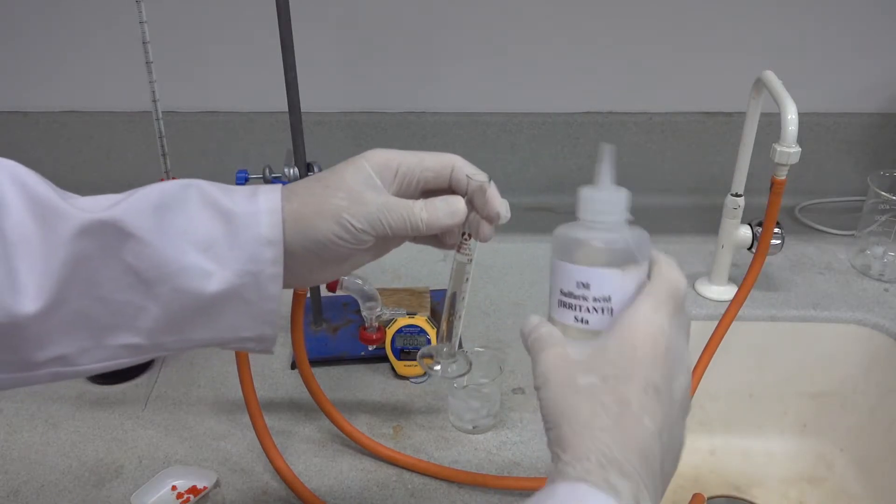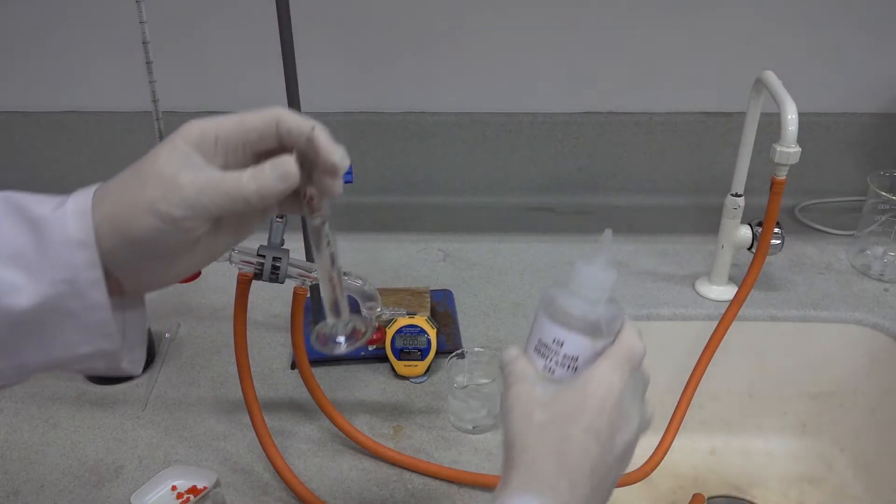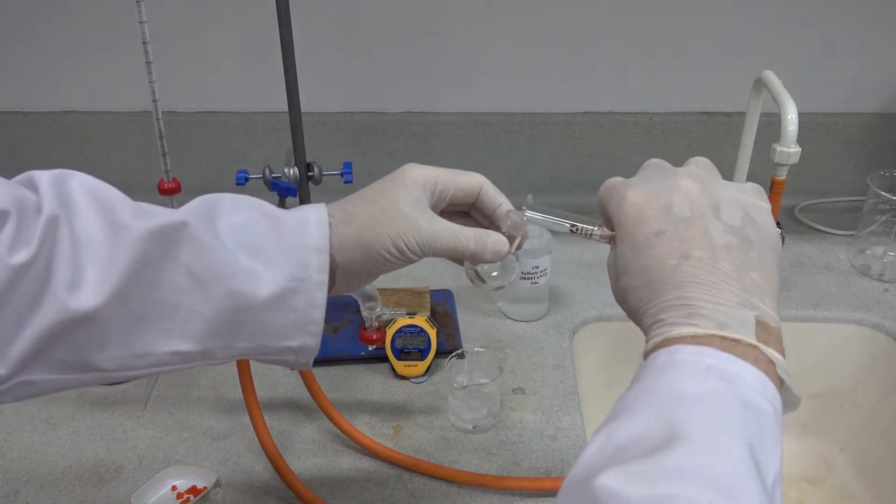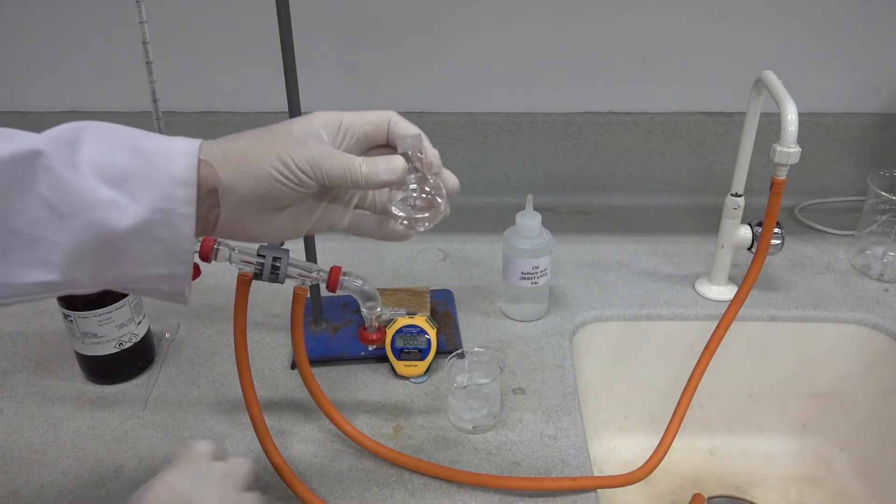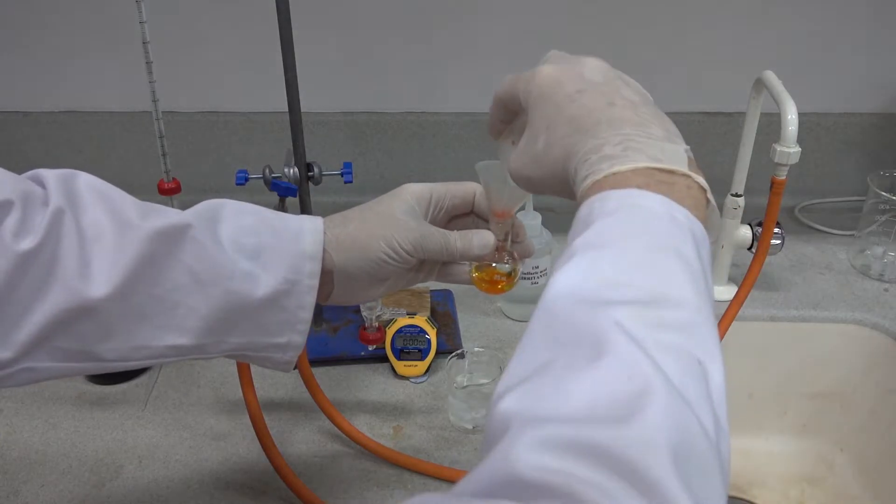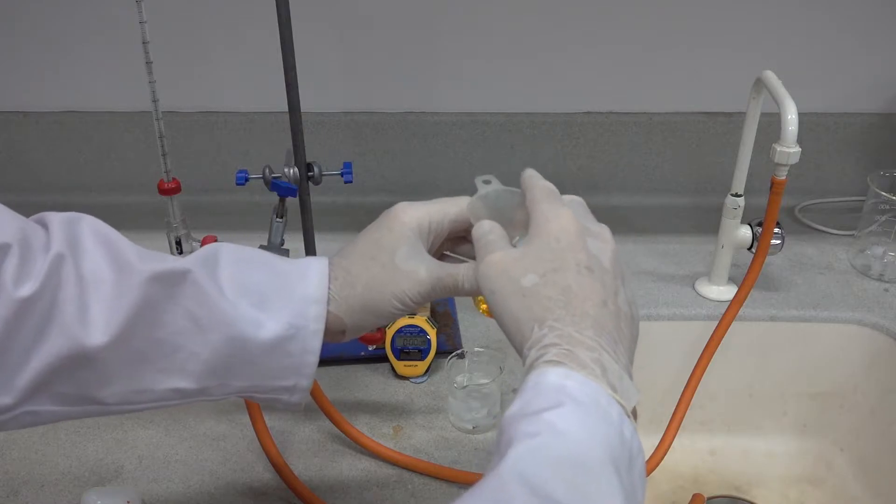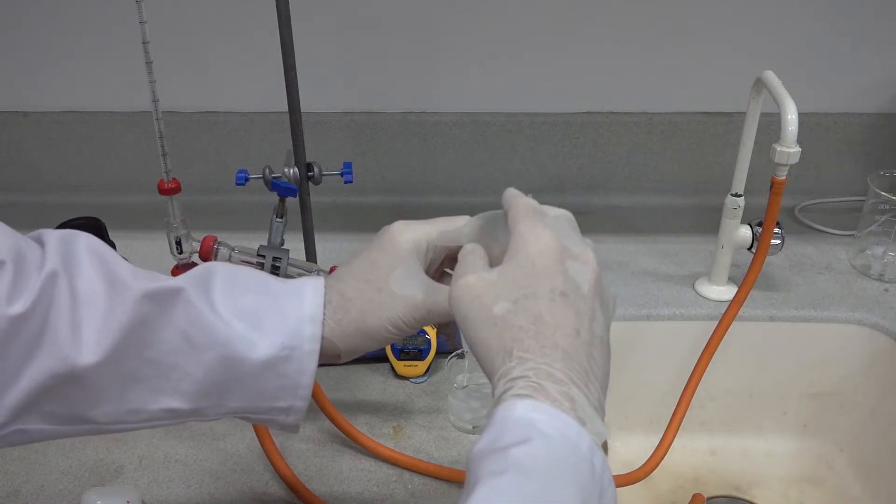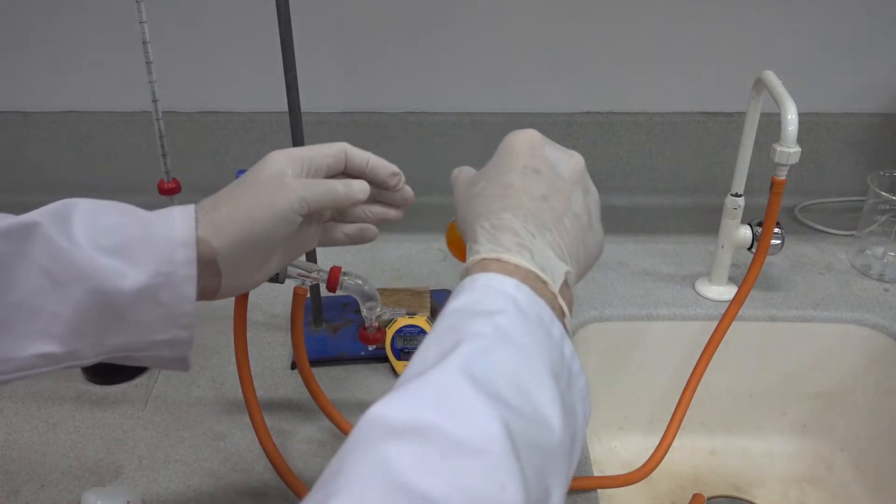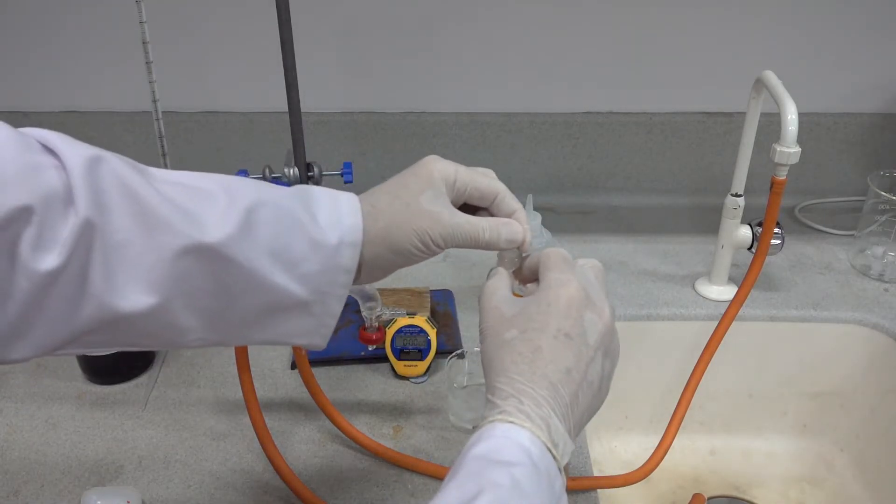We'll start by taking 10 centimeters cubed of 1 molar sulfuric acid and introduce that into a 25 centimeter cubed round bottom flask. You could do this in a boiling tube. Next, we're going to add the sodium dichromate to the one molar sulfuric acid using a powder funnel. It's not a particularly nice material, so we do want to be cautious with it, hence the gloves and the caution. We then give that a swirl to dissolve. We can add a few anti-bumping granules at this stage.